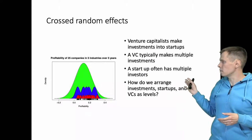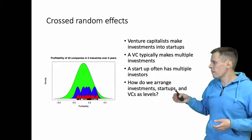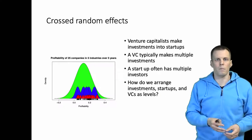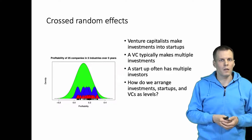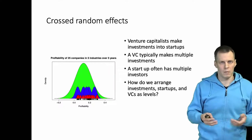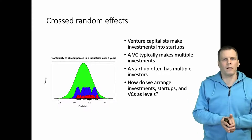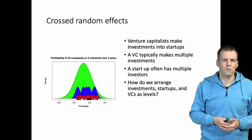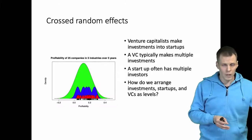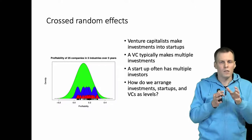Consider for example this scenario. We have venture capitalists that make investments in startups. A venture capitalist typically makes multiple investments — you have a fund, you invest it in 10 to 20 companies depending on the size of the fund, and then you have startups. But startups typically also, if it's a successful startup, try to get multiple investments. So how would you structure this kind of data — the investments, startups, or venture capitalists? There is no clear hierarchical structure.